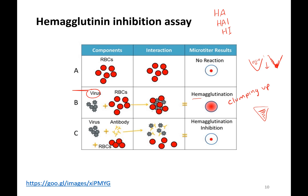The idea is if the animal we're testing has made antibodies to the virus, the antibodies will bind the virus and prevent the virus from binding the red blood cells, so you get no clumping. This looks like a no-reaction result, and it's called hemagglutination inhibition — you're inhibiting the agglutination, the clumping. You can put different viruses, like H1N1 or H3N2, into this mixture and see if the sera made antibodies specific to that virus that could prevent hemagglutination.